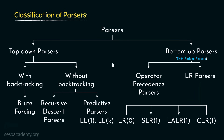Some insights about the different parsers: except for the operator precedence parsers, all other parsers are unable to handle ambiguous grammars, so unambiguous CFGs must be used. Top-down parsers with backtracking can handle non-deterministic CFGs, but top-down parsers without backtracking cannot — so non-determinism must be removed from the CFG. These parsers are also incapable of dealing with left recursion. Coming to LR parsers: SLR1 is more powerful than LR0, LALR1 is more powerful than SLR1, and CLR1 is the most powerful LR parser.